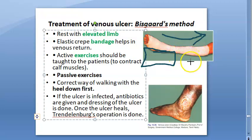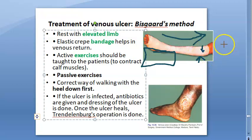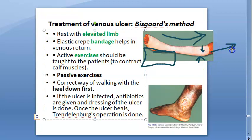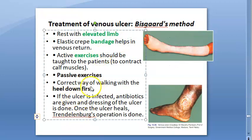Third, active exercises should be taught so the calf muscles can contract and relax — the calf muscles act as the second heart in the body, pumping the blood back to the heart. So the three key words for Biscard's regimen are: elevated limb, bandage, and exercise. Exercise can be active, passive, etc.